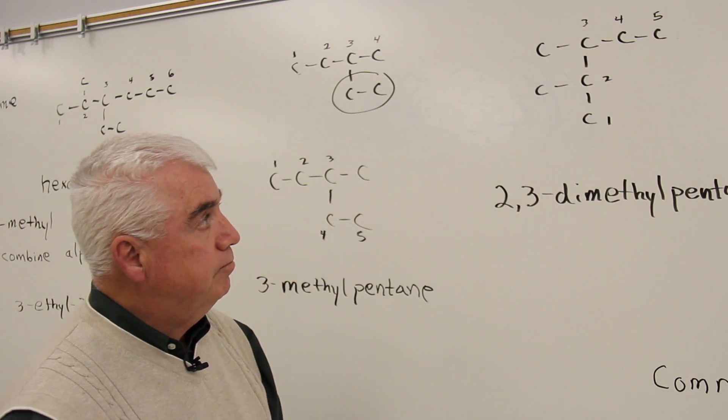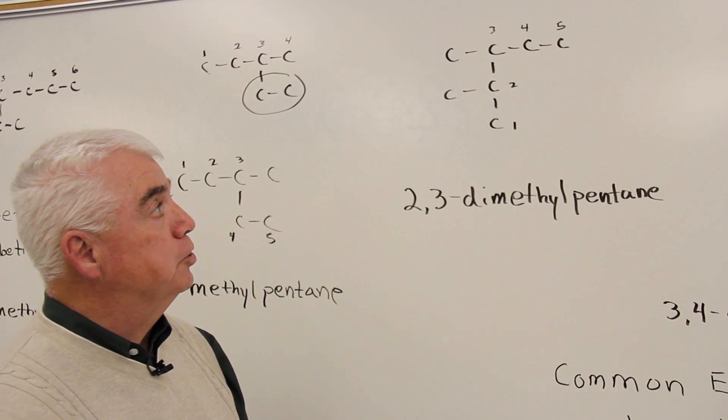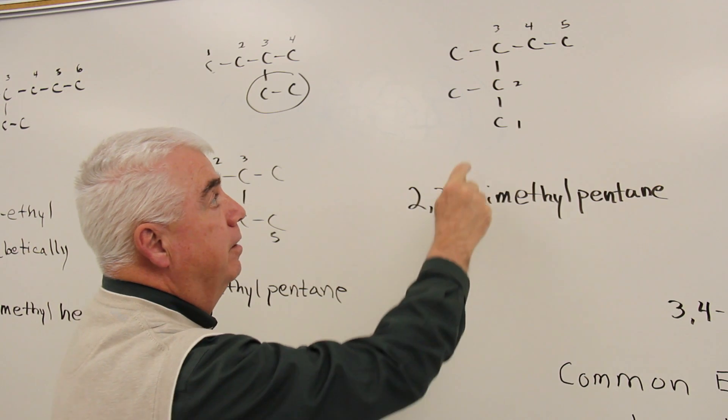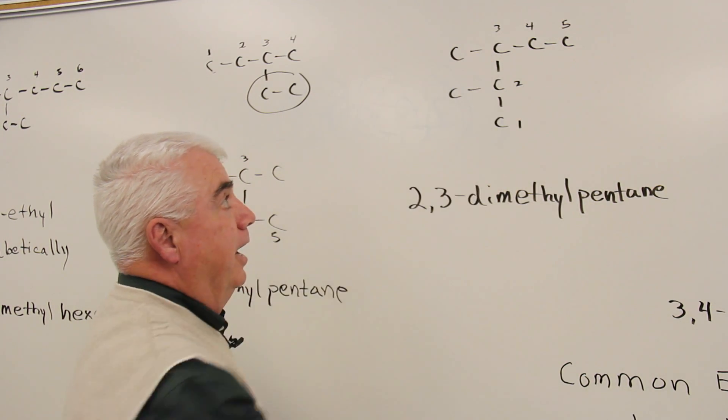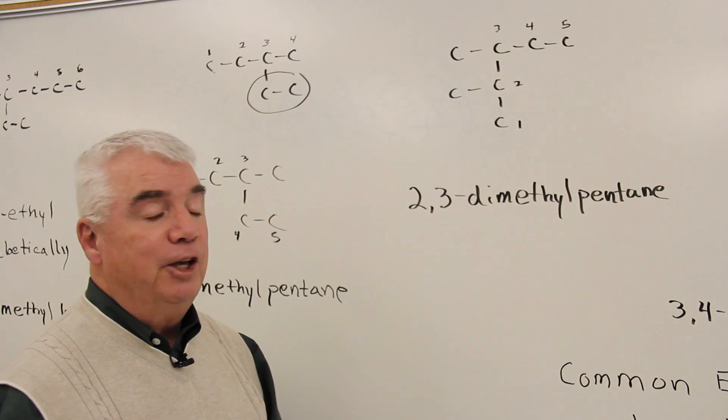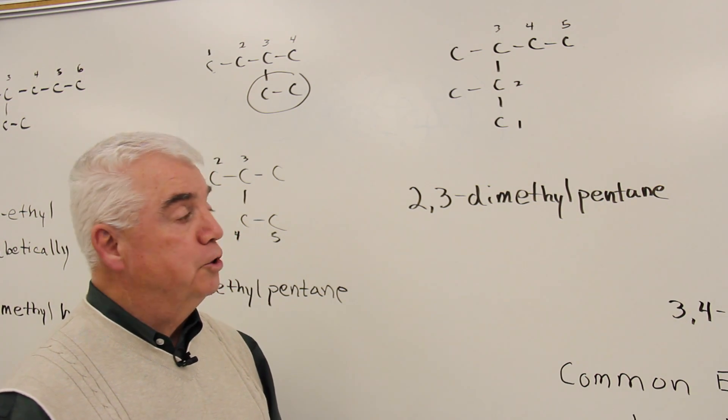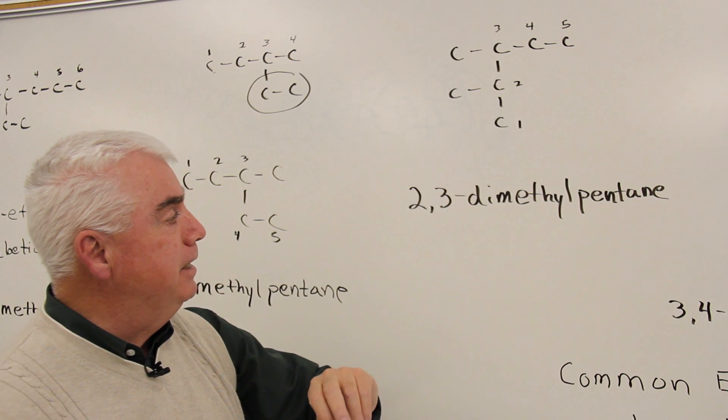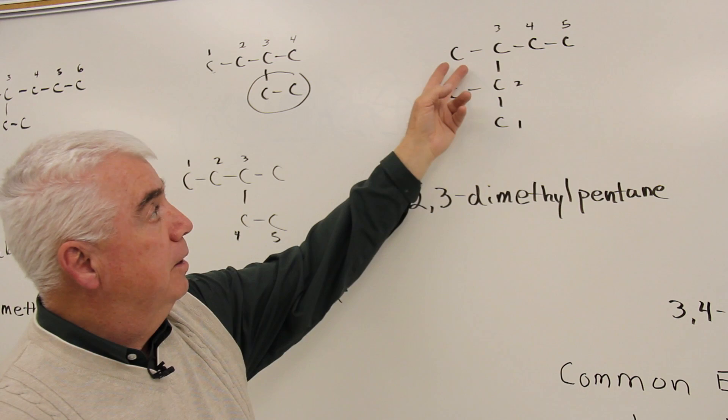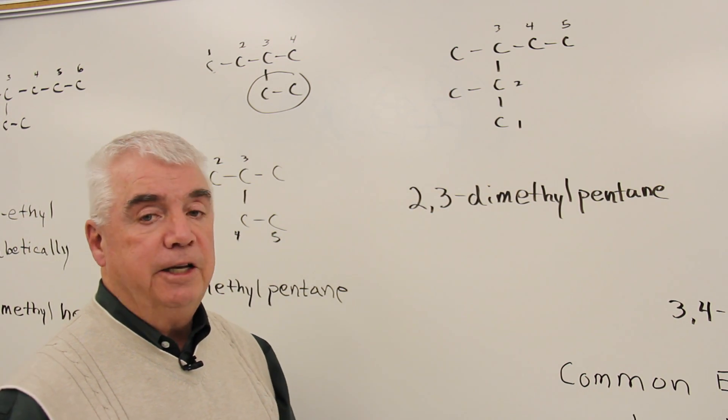In this structure, well, it looks a little more complex. Let's make sure that we've got the longest chain. And there are lots of chains in the molecule. Here's a chain of three, a chain of four. And if we go in this direction, we can end up with a chain of five. Usually the highest number that you come up with is the correct longest chain. So the base word would be pentane. At position two, I've got a one-carbon group. Position three is another one-carbon attachment. So it's two-three dimethyl pentane.